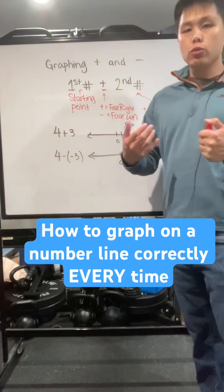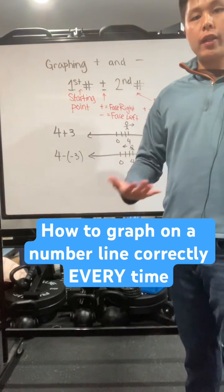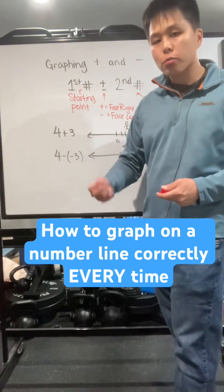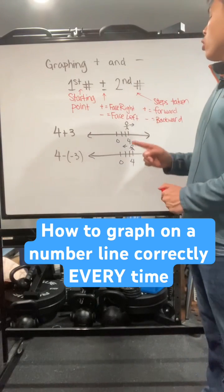So I was trying to think of a way to describe how you would graph a number on a number line and how it actually can help you understand when you're adding and subtracting positive and negative numbers. So here's the way to go about it.